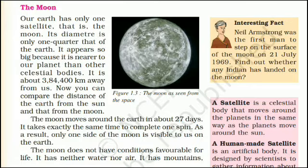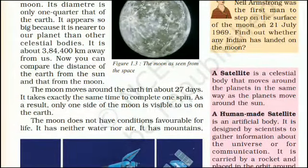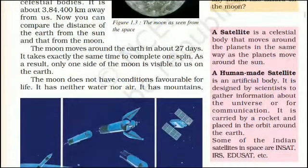Interesting fact: Neil Armstrong was the first man to step on the surface of the Moon on the 21st of July 1969. Find out whether any Indian has landed on the Moon. A satellite is a celestial body that moves around the planets in the same way as the planets move around the Sun. A human-made satellite is an artificial body designed by scientists to gather information about the universe or for communication. It is carried by a rocket and placed in orbit around the Earth. Some of the Indian satellites in space are INSAT, IRAS, EDUSAT, etc.